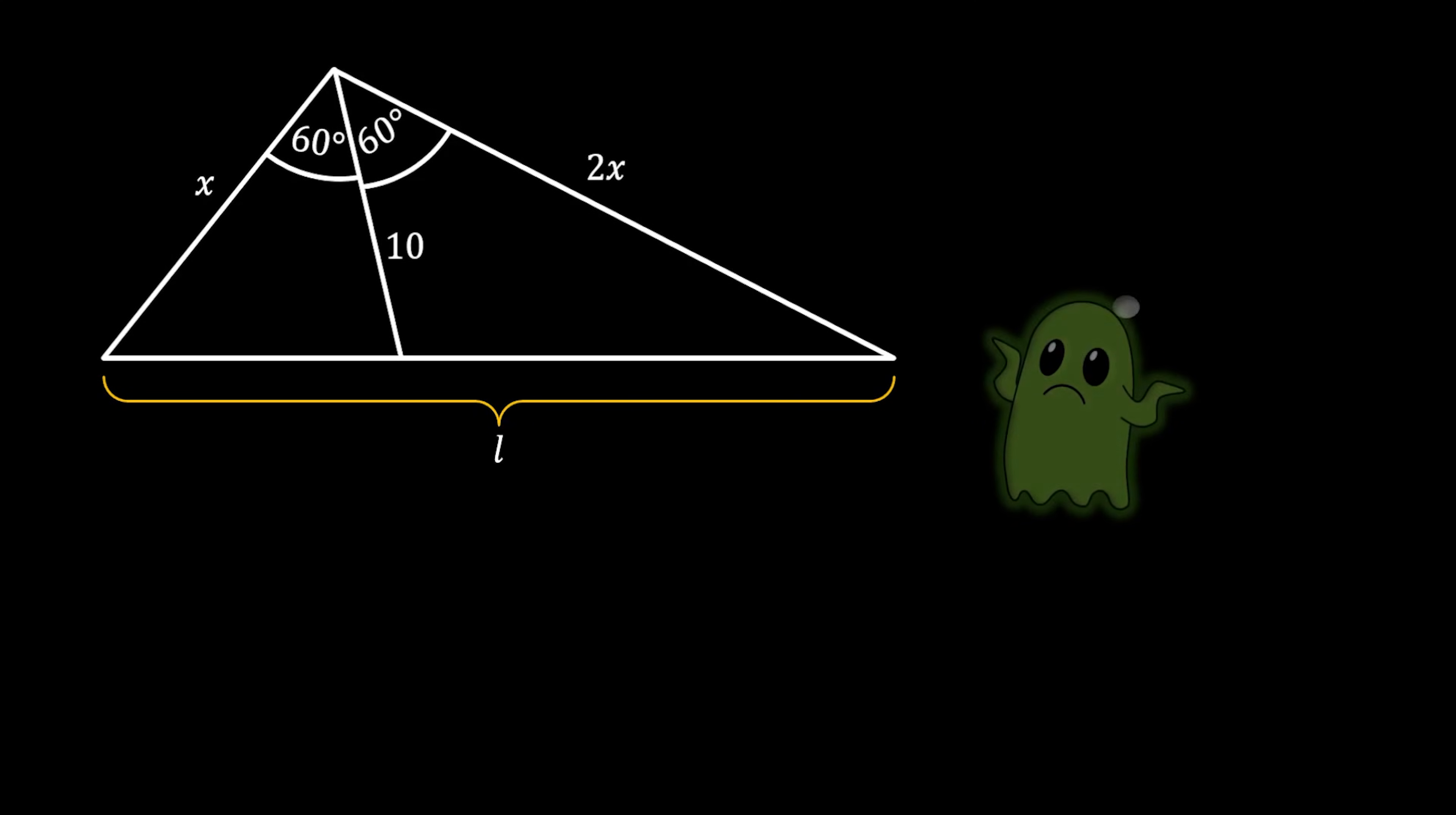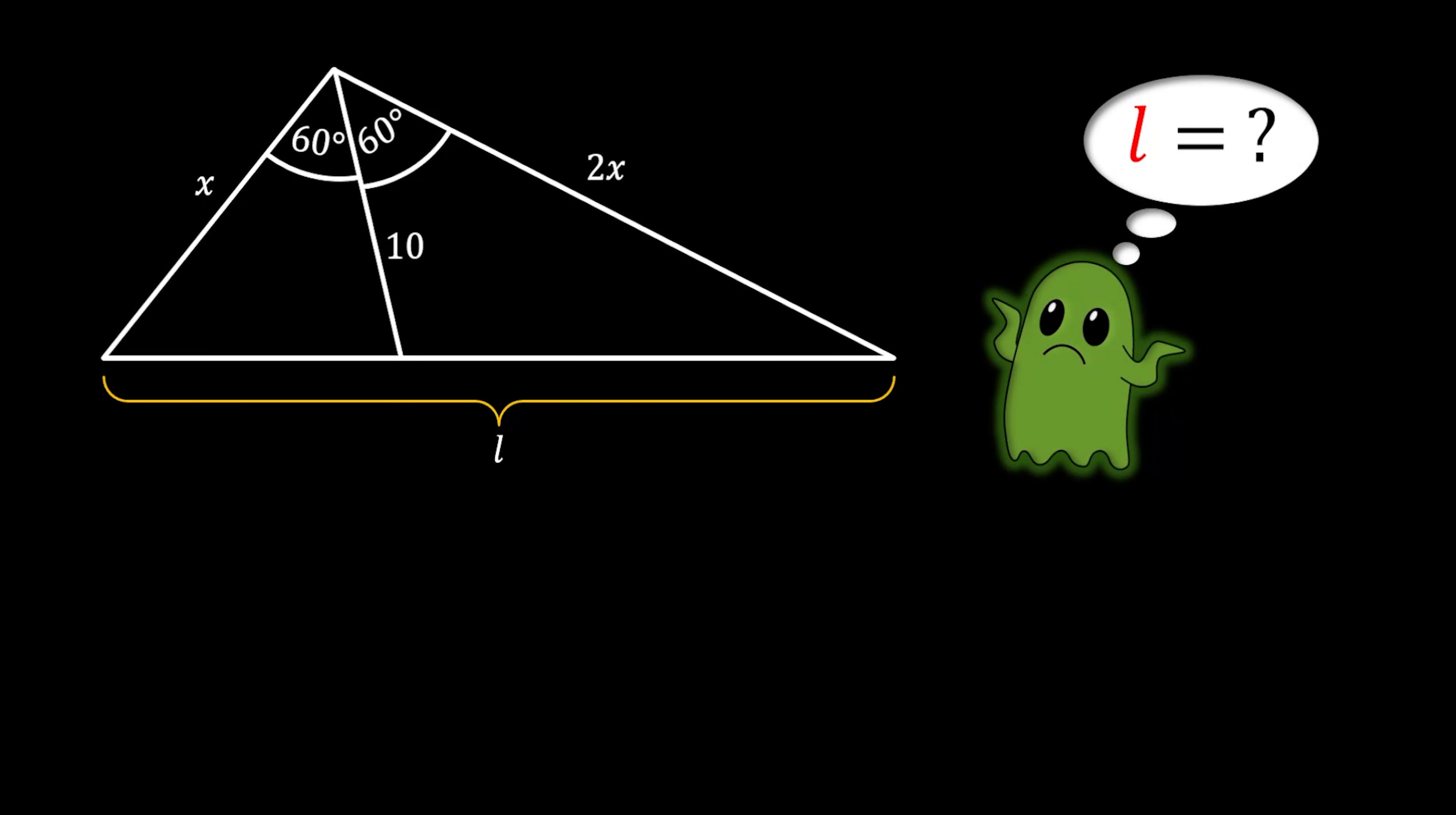We are going to start our problem with a triangle who has two sides in a relation of 2 to 1, as you can see on the sketch. Then from the apex of this triangle, we will pull another line to the bottom side. This line will have the length of 10, and it will also bisect the upper angle into two angles of 60 degrees. Now the question is, can we somehow calculate the length of the third line of the triangle?